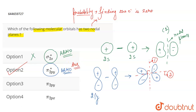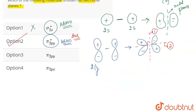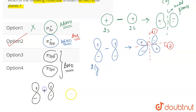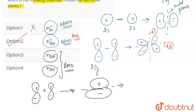Now if we talk about the other options — π2py and π2px — these are bonding molecular orbitals. Both of these undergo constructive interference. For π2py, the 2py orbitals undergo constructive interference, and what we get is plus and minus.